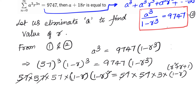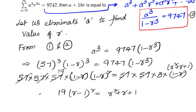Let's cancel the two 57s. Then 3 goes 19 times into 57, so we're left with 19 times (1 minus R)². After canceling (1 minus R) from both sides, 19 times (1 minus R)² equals R² + R + 1. So we have a quadratic equation now — we just need to find the value of R.